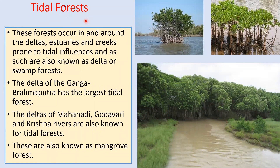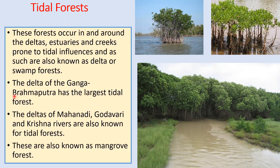The last type is tidal forests. These forests occur in and around the deltas, estuaries, and creeks prone to tidal influences and are known as delta or swampy forests. Because they are found in swampy areas, when the tide recedes you can see the roots of the trees. Like the banyan tree, roots spread out from the branches to help the trees withstand the muddy and swampy ground. The delta of the Ganga-Brahmaputra has the largest tidal forest. The deltas of Mahanadi, Godavari, Krishna, and Kaveri rivers are also known for tidal forests, which are otherwise known as mangrove forests.